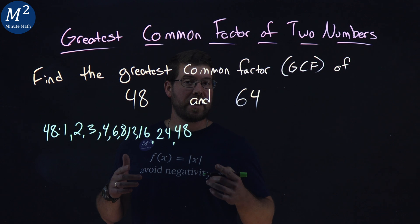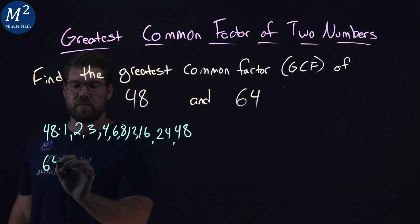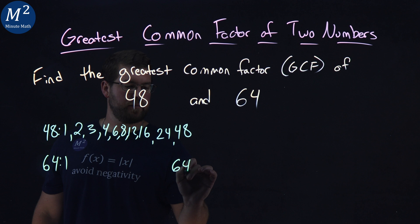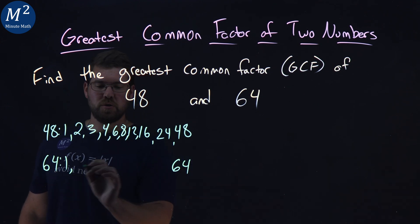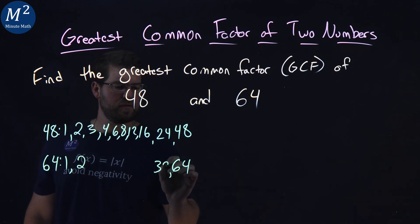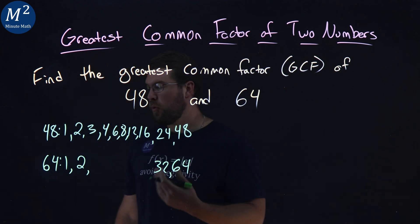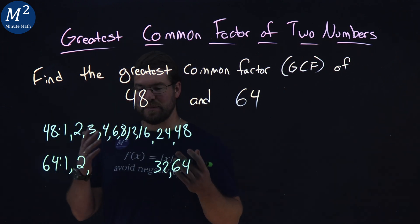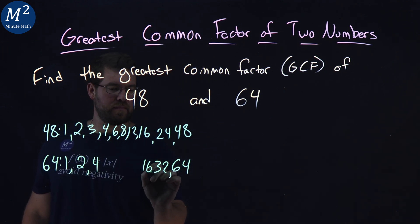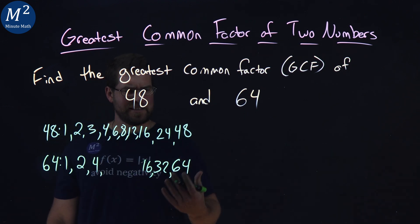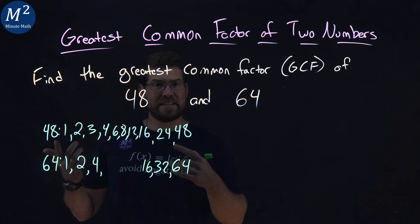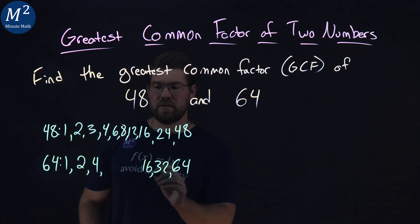Now let's list the factors of 64. We have 1 and 64. 2 goes into 64 — that's going to be 32 times. 3 doesn't. 4 goes in — that's going to be 16 times. 5 doesn't, 6 doesn't, 7 doesn't. 8 does — 8 times 8 gets me 64.